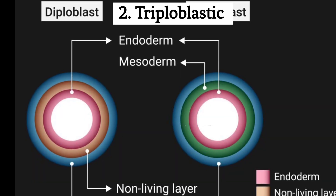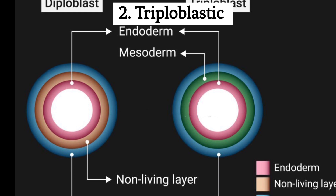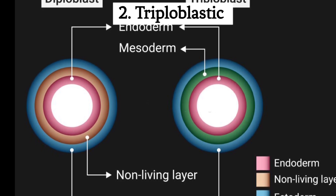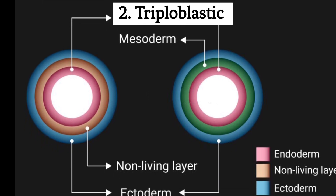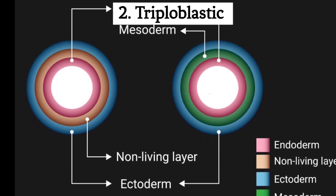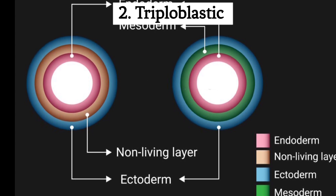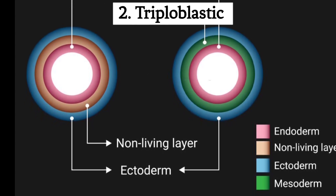Second, triploblastic organization. Unlike cnidarians, flatworms are triploblastic, meaning they have three embryonic germ layers: ectoderm, mesoderm, and endoderm.